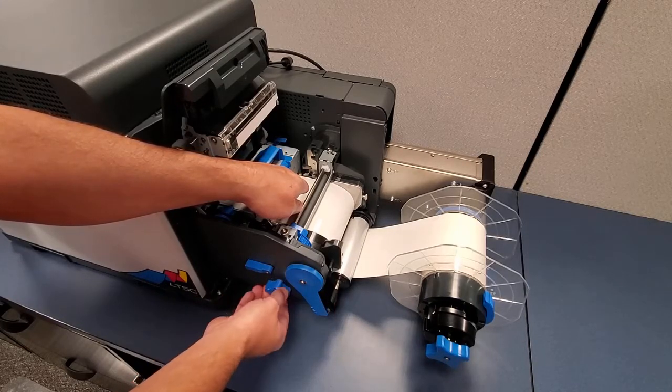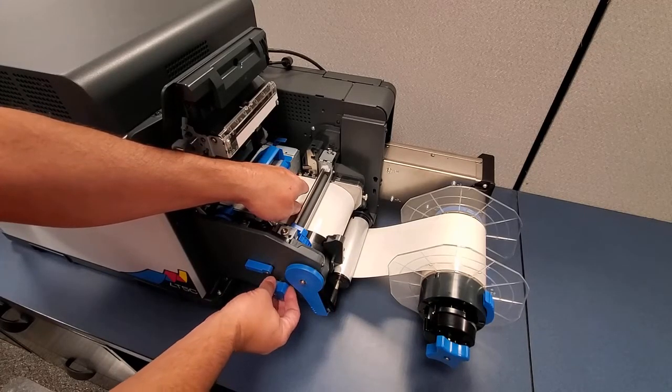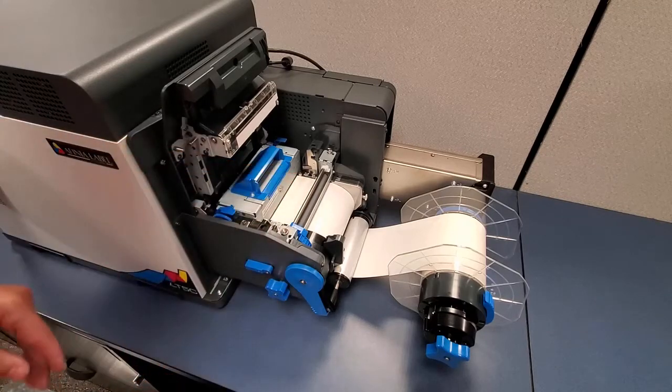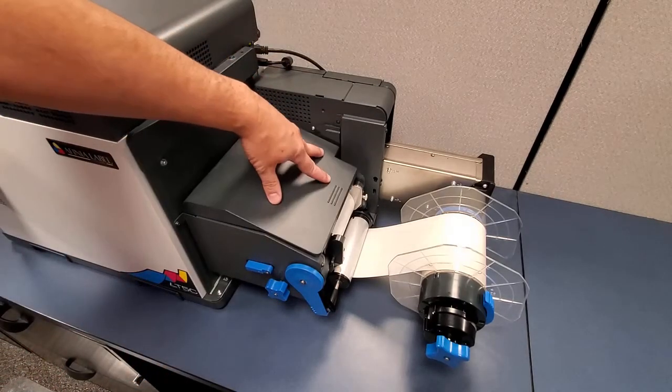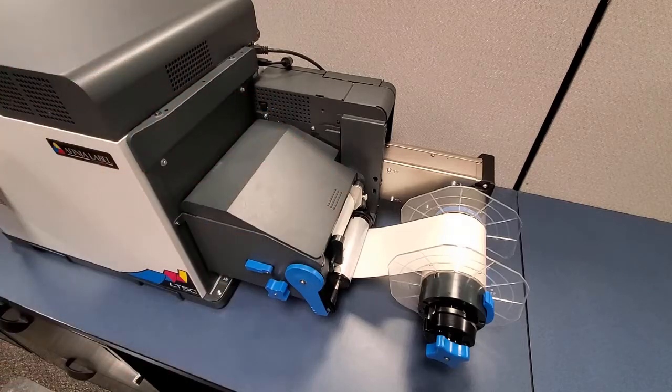Adjust the media guide to the edge of the label stock. Close the media door. The printer will apply tension to the roll.